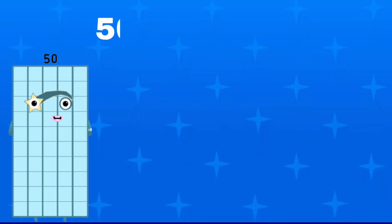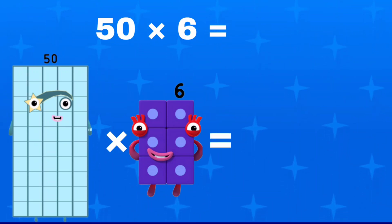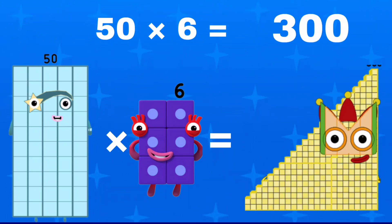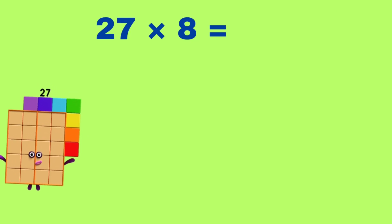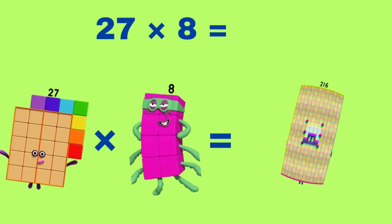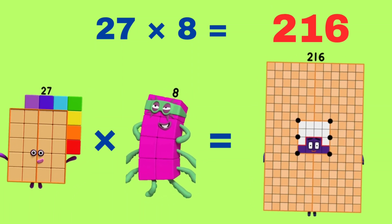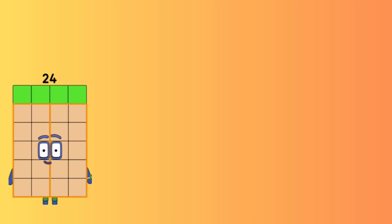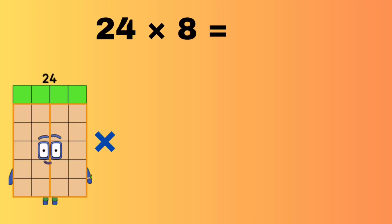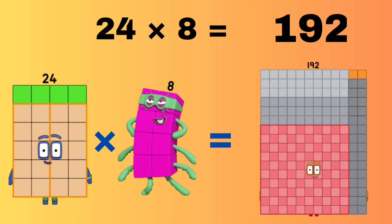50 multiplied by 6 equals 300. 27 multiplied by 8 equals 216. 24 multiplied by 8 equals 192.